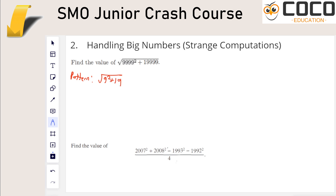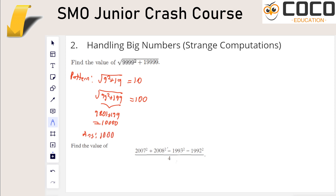For instance: 9 squared is 81, plus 19 is 100, and the square root of 100 is 10. Let's check one more: 99 squared plus 199 — that's 9801 plus 199, which equals 10,000, so the square root is 100. You can roughly see the pattern: 9 squared plus something gives root 10; 99 squared plus something gives root 100. So based on the pattern, the answer for the four-9's case should be 10,000.